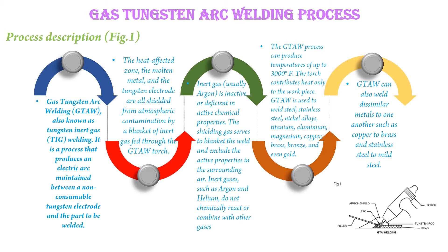Inert gas, usually argon, is inactive or deficient in active chemical properties. The shielding gas serves to blanket the weld and exclude the active properties in the surrounding air. Inert gases such as argon and helium do not chemically react or combine with other gases.